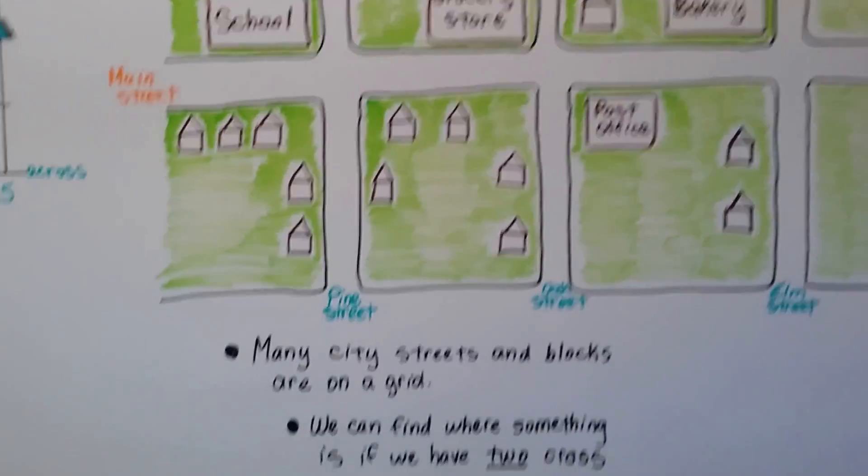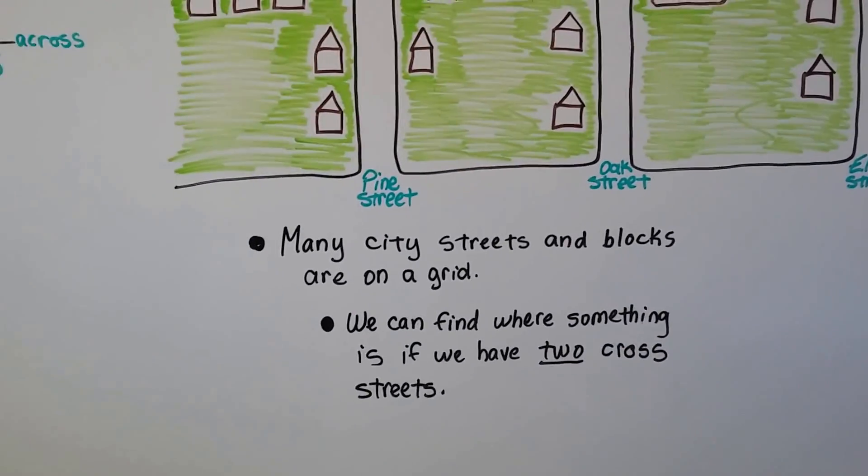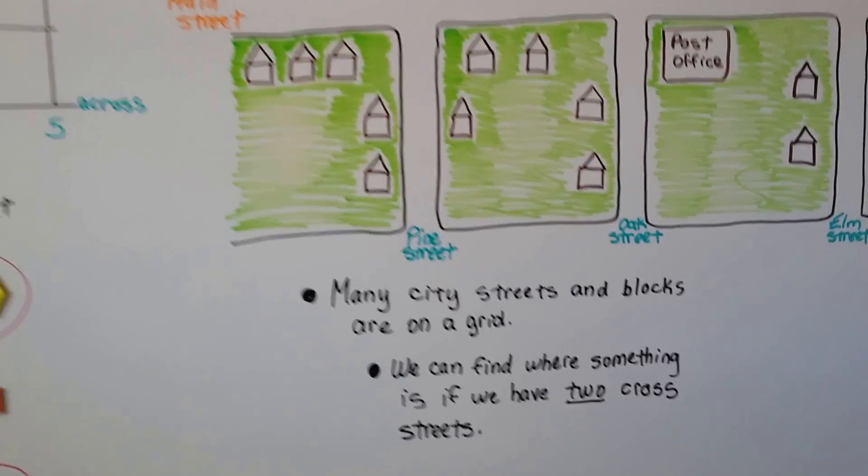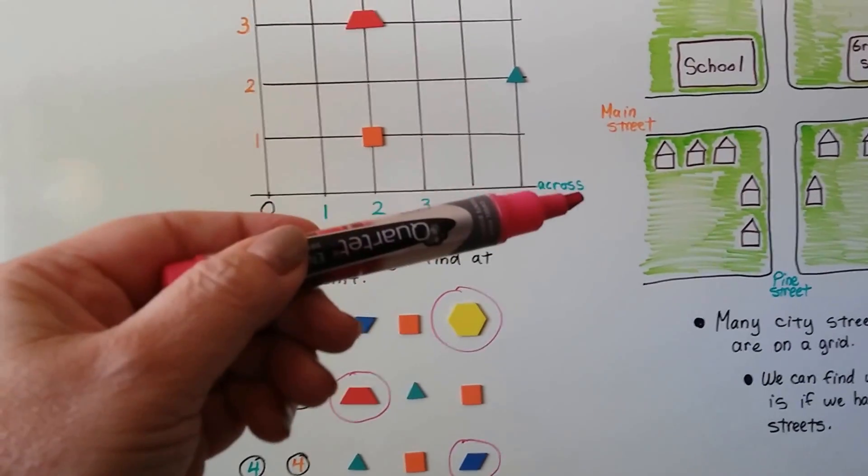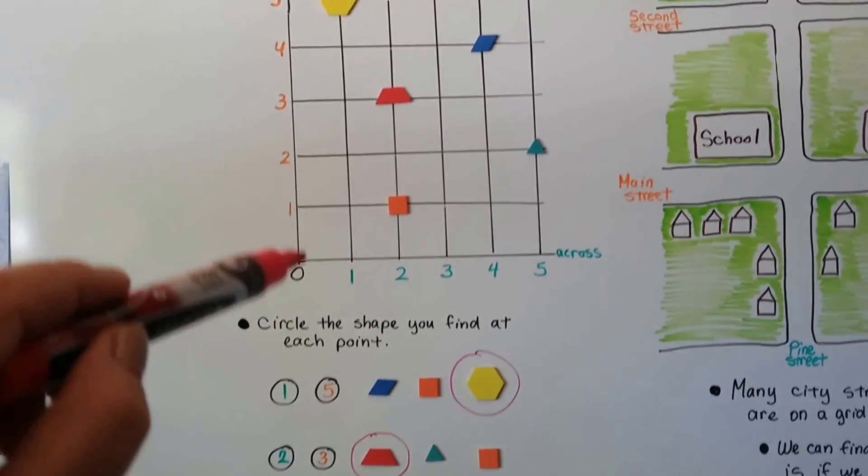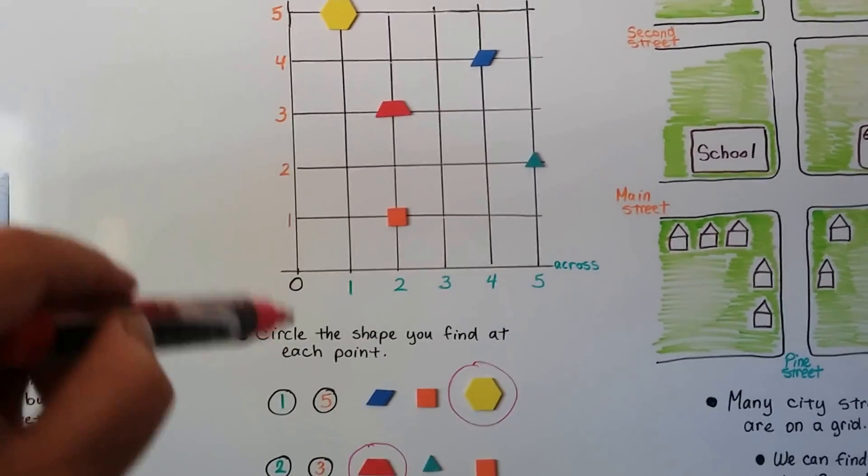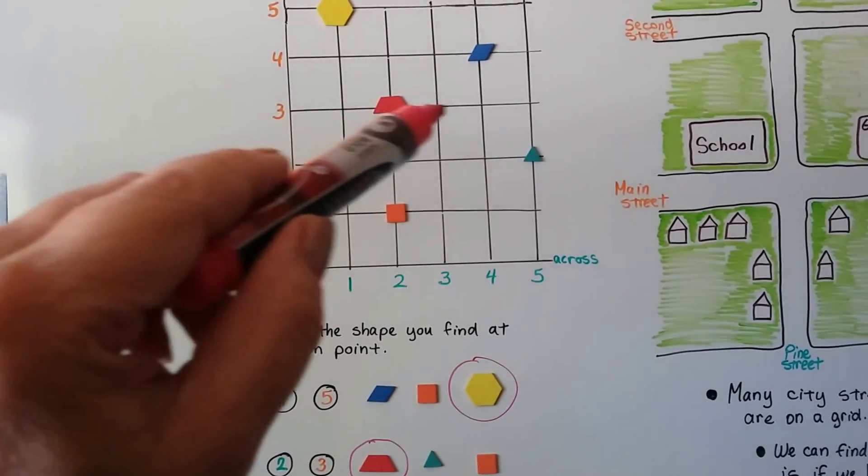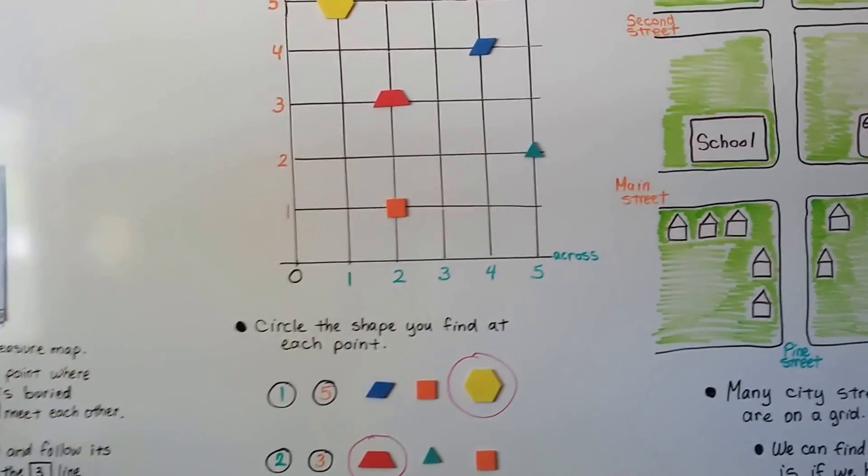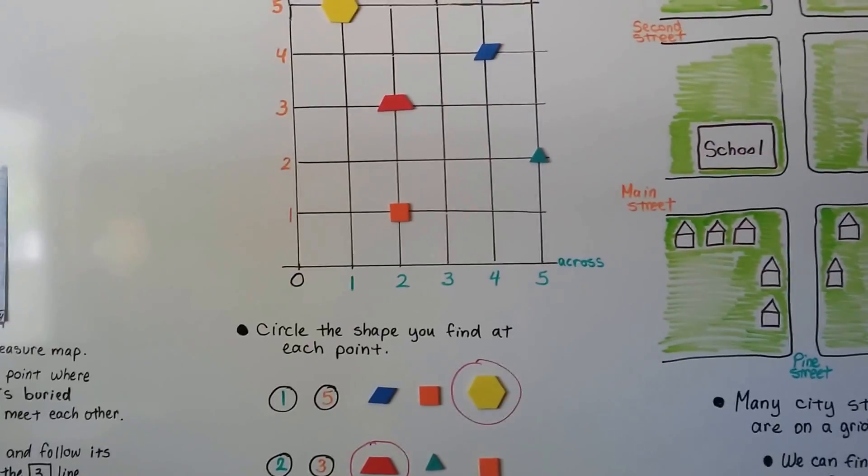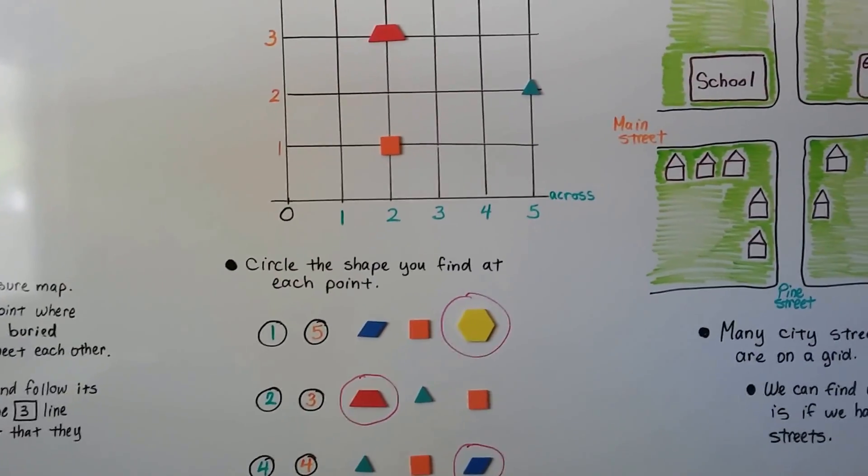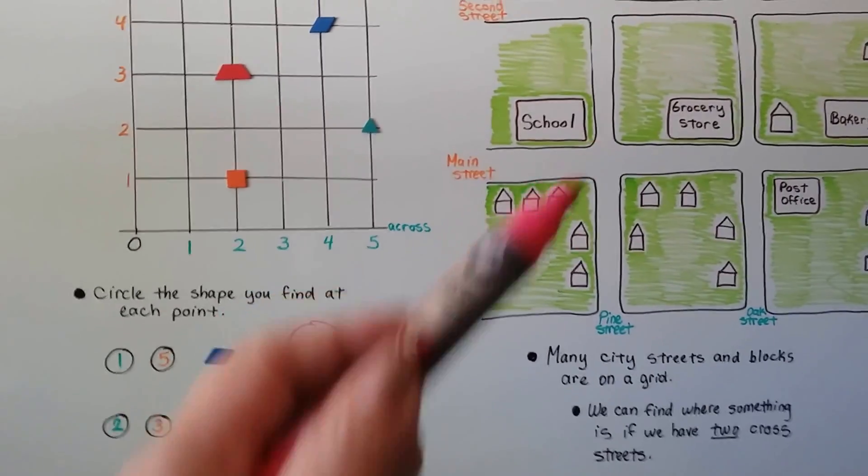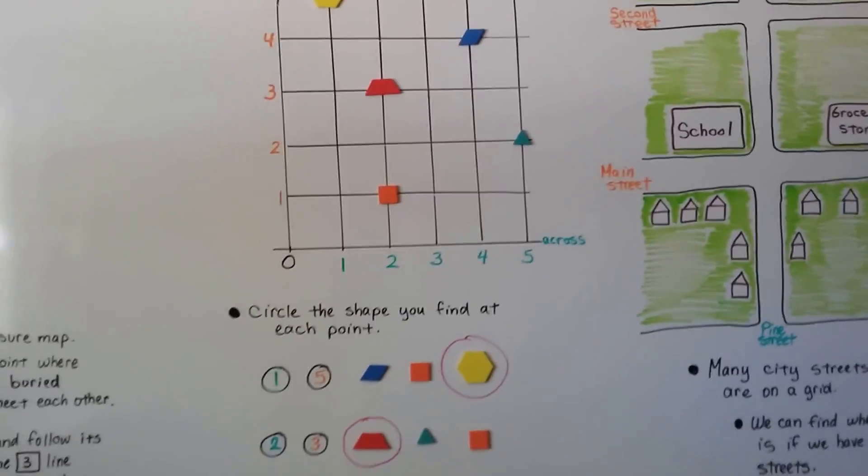It's really important to have two pieces of information. If you have information of where it is going across and information of where it is going up or down, then you know where they intersect and where they meet and you can find the location. An ordered pair is just two numbers that mark a point on a grid. You know where something is at.